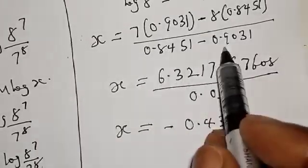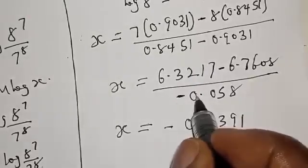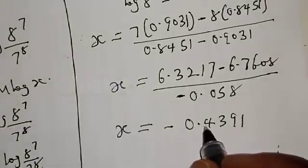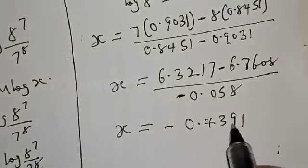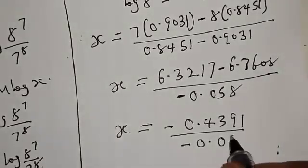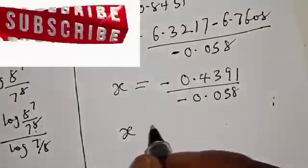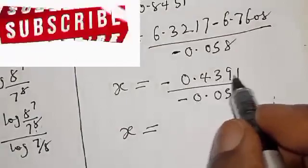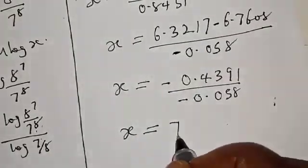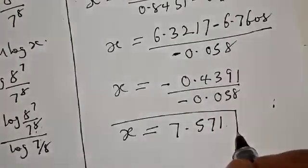So we have x is equal to 6.3217 minus 6.7608, which gives minus 0.4391. The denominator: 0.8451 minus 0.9031 gives minus 0.058. Therefore, our final answer is x is equal to minus 0.4391 divided by minus 0.058, which gives 7.571. That is our final answer.